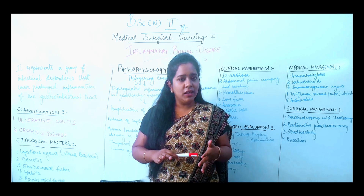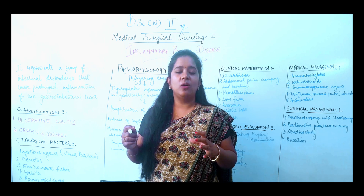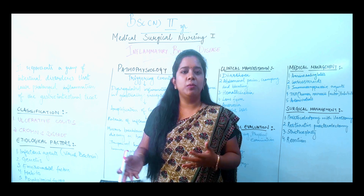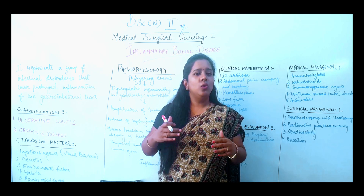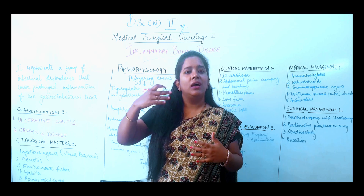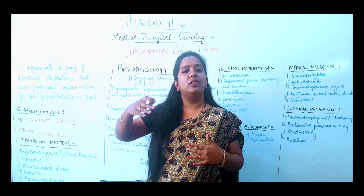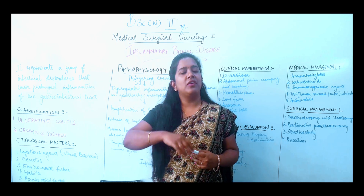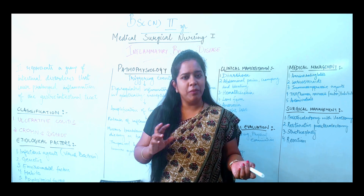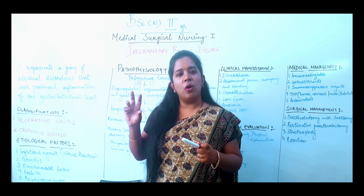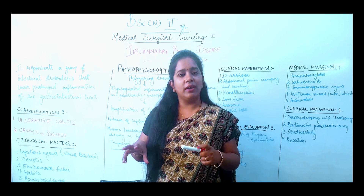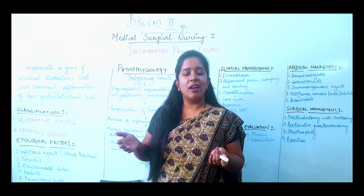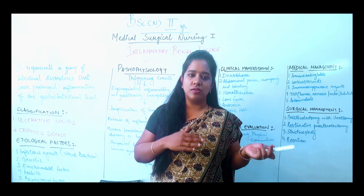Ulcerative Colitis is mainly seen in the sigmoid colon and rectum — about 30 to 50% of incidences occur here. From there it travels to one side of the intestine, then the transverse side. So the onset is mainly in the sigmoid or rectum and it travels back through the large intestine, from the distal end to the proximal end.